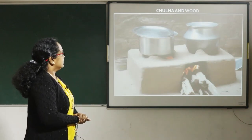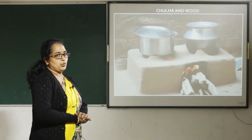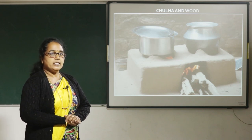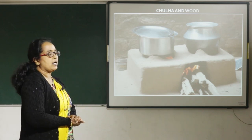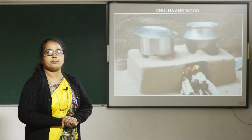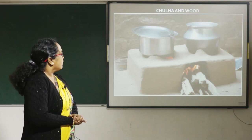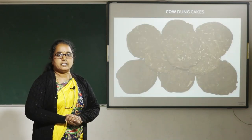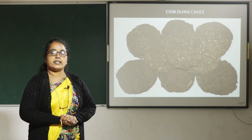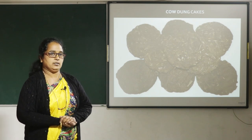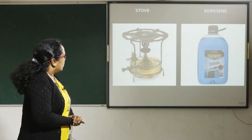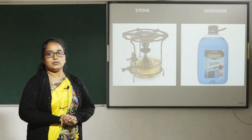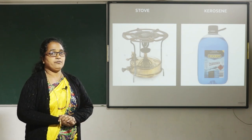Chula and wood. This is a chula in which wood is used as fuel. Here you can see the pieces of wood are burning for preparing the food. Cow dung cakes are also used as a fuel in the chula. In a stove, kerosene oil is used as fuel.